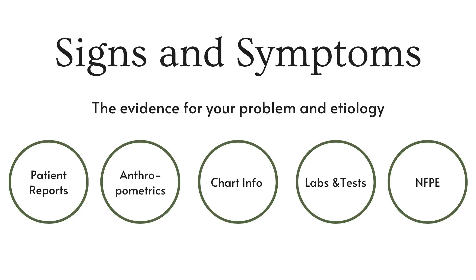The signs and symptoms are your evidence for your problem and etiology, and they help you justify your decision to treat a problem. Things you can list as signs and symptoms include patient and family reports, anthropometrics, chart information, labs, tests, and NFPE. If you got the information from the patient, make sure you say so. Ask yourself: what led me to believe that the patient had the nutrition problem I thought they had?